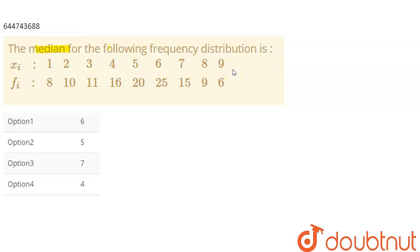So here we have the question which says the median for the following frequency distribution is. So here xi and fi are given. Xi is 1 up to 9 and fi is 8, 10, 11, 16, 20, 25, 15, 9, and 6.